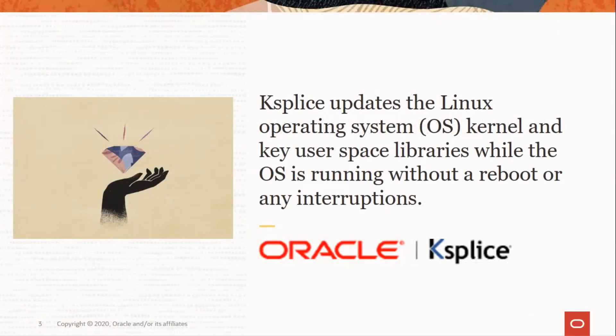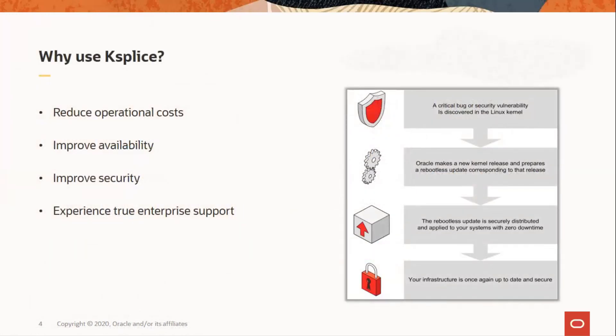Linux kernel updates with important new security and reliability patches are released about once per month. That means coordinating with customers to schedule outage windows, completing paperwork and working through multi-hour outage windows on Sunday at 2 a.m. With Ksplice, say bye-bye to service disruption. Oracle Ksplice updates select critical components of your Oracle Linux installation with all of the important security patches without needing to reboot. It is available to Oracle Linux customers with Oracle Linux Premier Support. Ksplice allows system administrators to install critical patches with lower costs, less downtime, increased security and greater flexibility and control.